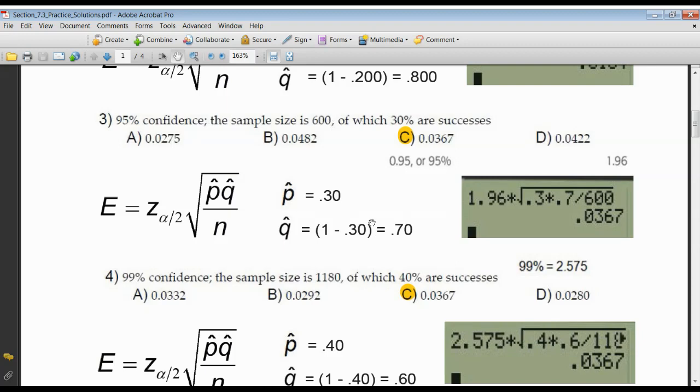Once again, because of the 0, I can get away with just saying 0.3 times 0.7. So my Z score times the square root of P hat, I'm using 0.3, times Q hat, I'm using 0.7, divided by N, which is 600. And you can see how things match up very nicely.